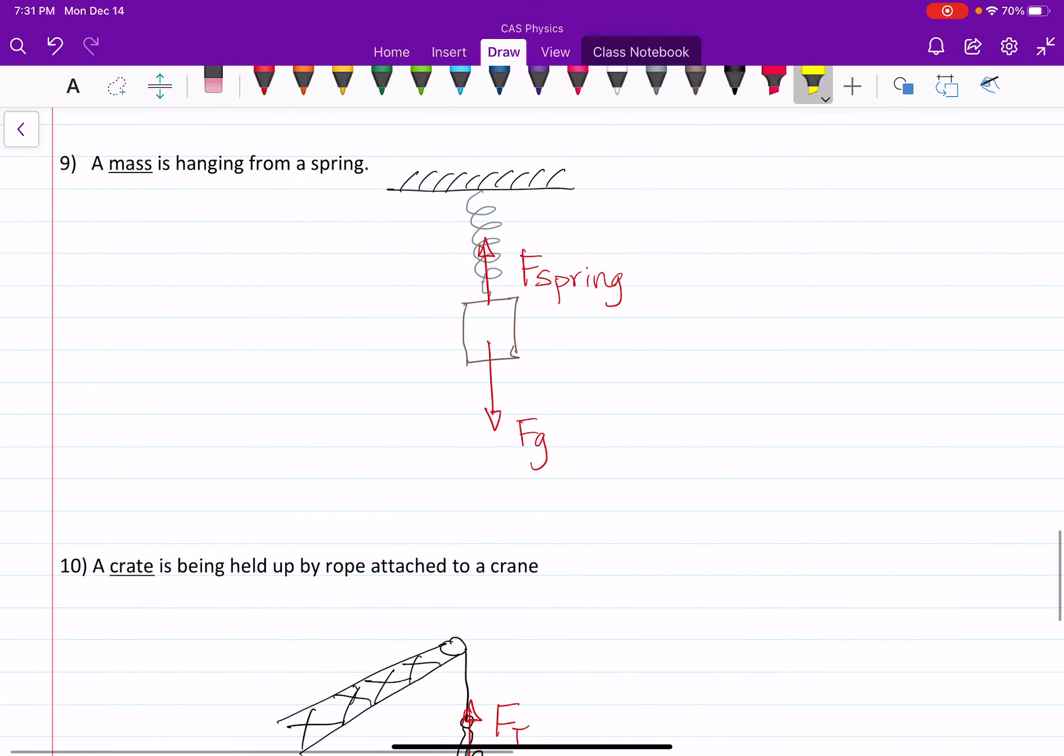Question nine, a mass is hanging from a spring. So again, it's on the earth, so we've got a gravitational force, and then we have a spring force acting up. The spring is pulling the mass towards the ceiling. But it's probably just hanging there, not moving.